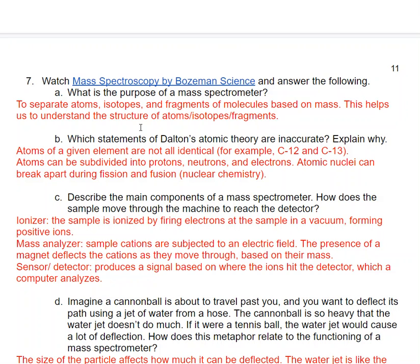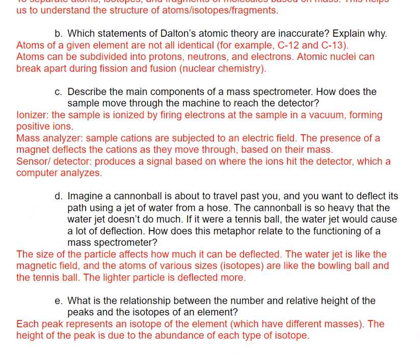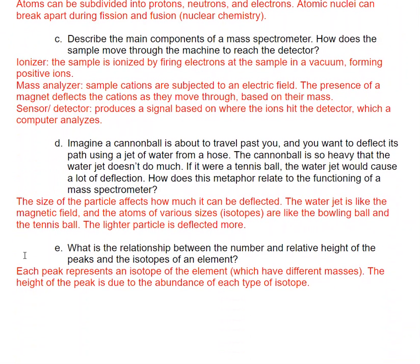So the next question here is asking about deflecting the path of a cannonball versus a tennis ball. So the size of the particle affects how much it can be deflected. The water jet is like the magnetic field, and the atoms of various sizes are like the bowling ball and the tennis ball. So the lighter particle will be deflected more, just like how with your water jet, you can more easily deflect the path of a tennis ball than a bowling ball.